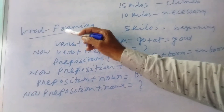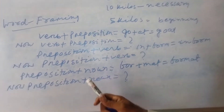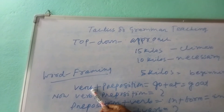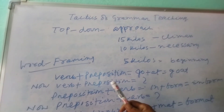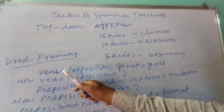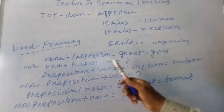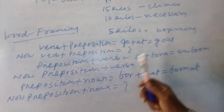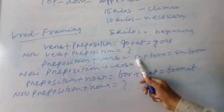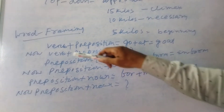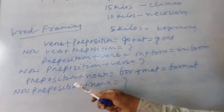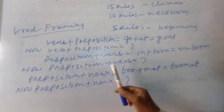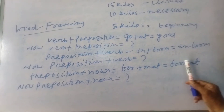Apart from the top-down approach, here is a good practice: come to verb plus preposition — make one word. Suppose 'go' (verb) plus preposition 'at' becomes 'goat.' Again, students are asked to do verb plus preposition for another answer. Preposition plus verb: preposition 'in' plus verb 'form' gives 'inform.' Again students are to tell another preposition plus verb. Then preposition plus noun: 'for' plus noun gives 'format.'